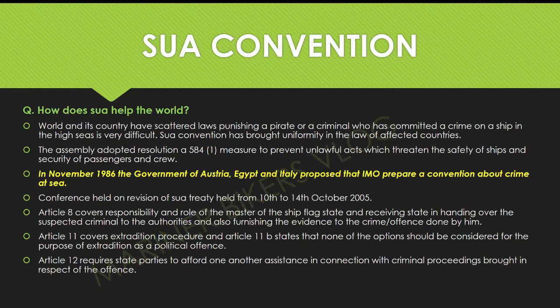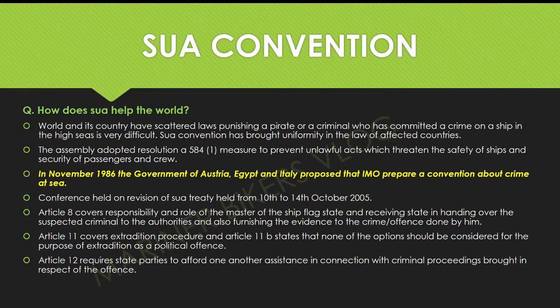Article 8 covers the responsibility and role of the master, the ship's flag state, and the receiving state in handing over the suspected criminal to the authorities and furnishing evidence of the crime or offense committed. Article 11 covers extradition procedure, and Article 11b states that none of the offenses should be considered a political offense for the purpose of extradition. Article 12 requires state parties to afford one another assistance in connection with criminal proceedings brought in respect of the offense.